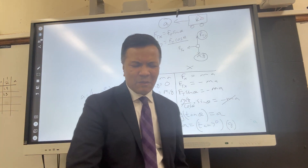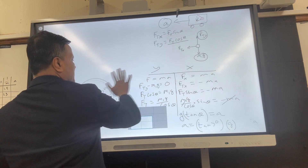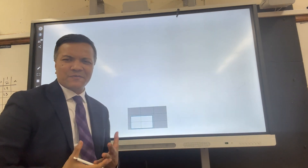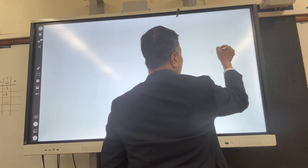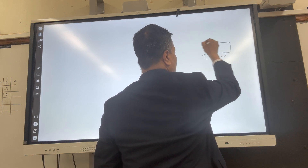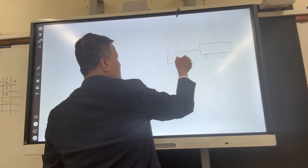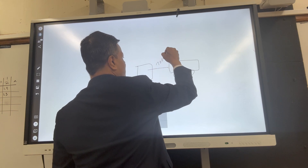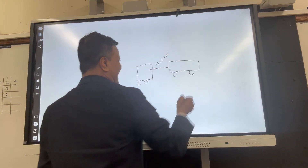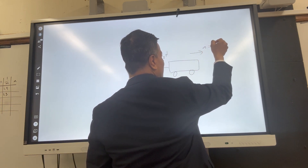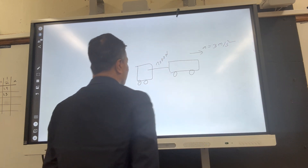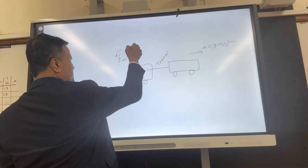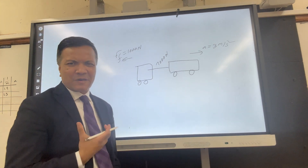Now let's consider another problem to understand tension force further — specifically, can tension force be negative? No, tension cannot be negative. Here's the problem: a truck is attached to a trailer by a rope with a breaking point of 7000 newtons. The truck accelerates at 3 m/s², and there is friction of 1000 newtons on the ground. We want to find the mass of the trailer.